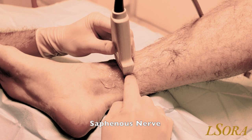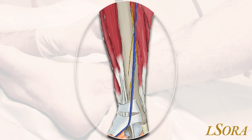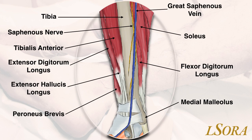The second nerve we block is the saphenous nerve. Looking at the anatomy of the medial aspect of the leg, you will identify that the saphenous nerve lies in close proximity to the great or long saphenous vein, and as such, this venous landmark is used to assist with the block.